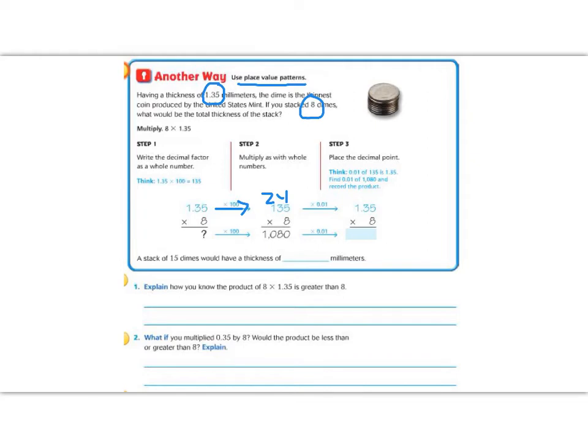But now, since I multiplied by 100 over here, and that's not what my actual number was, now I want to multiply by a descending power to put my decimal back in.